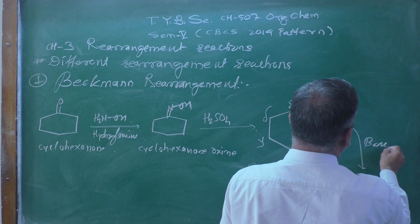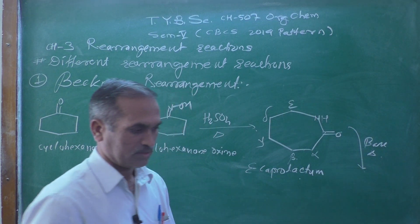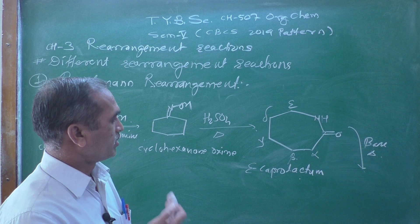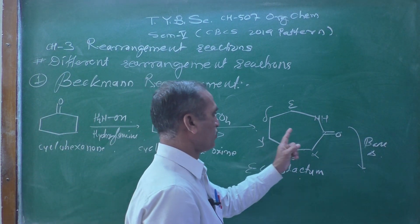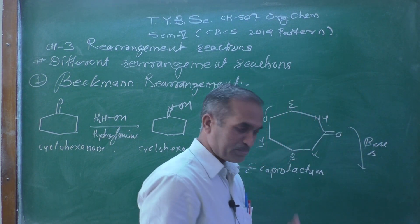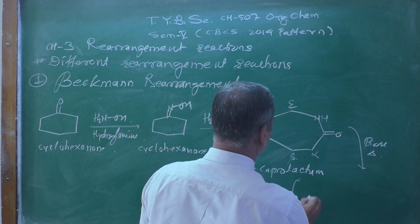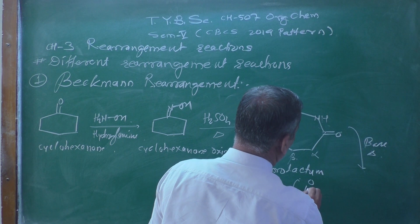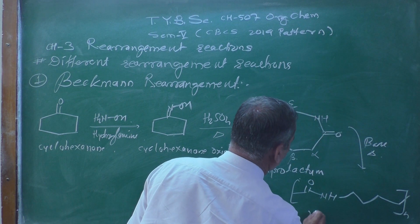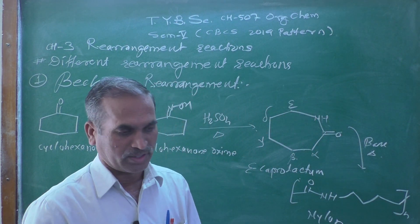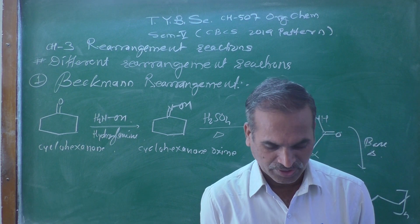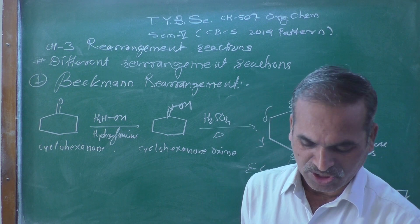ε-Caprolactam is an essential requirement for the synthesis of nylon. When treated with alkaline medium (base) and heating — since the Beckmann rearrangement is accelerated at high temperature — the peptide bond is broken and polymerization occurs, giving –(C=O)–NH– repeating units. This is known as nylon-6, and it is one of the best industrial applications of the Beckmann rearrangement.